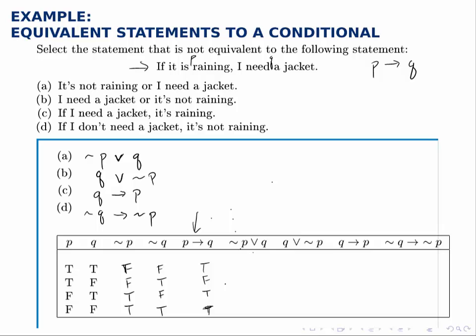For the next column, not P or Q, so we look at not P, the third column, and Q, the second column, combine them with OR, which is true any time at least one of them is true.